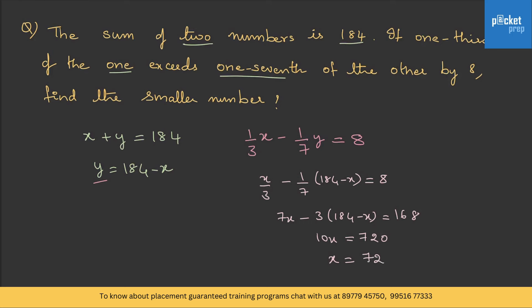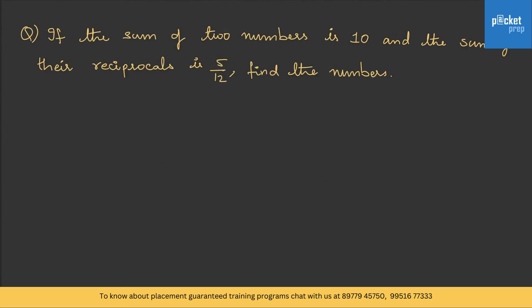If x is 72, then y = 184 - 72 = 112. They are asking for the smaller number, so the answer is 72. Let's try one more: the sum of two numbers is 10, and the sum of the reciprocals is 5/12. Find the numbers.